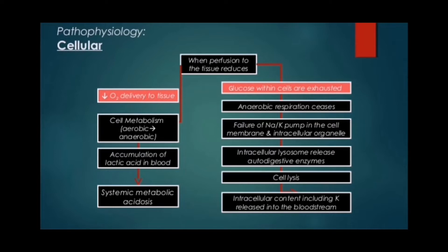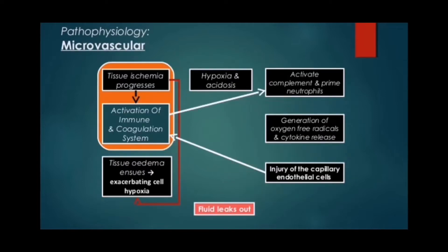There is intracellular lysosome release of digestive enzymes, which results in cell lysis. The products of cell lysis and potassium circulate in the blood. At the microvascular level, as tissue ischemia progresses, changes in the local milieu result in activation of the immune and coagulation systems.